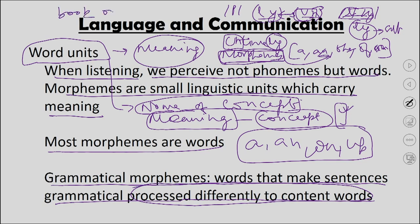Grammatical morphemes actually help us decide what meaning is being conveyed. For example, 'book on the table' versus 'book in the table' — the words 'on' and 'in' decide where it is. When the book is 'on' the table it is on top; when it is 'in' the table it is inside. These grammatical morphemes help us extract meaning from sentences, while content words like 'table' and 'book' do not change — it is the grammatical words like 'on,' 'in,' 'the,' or 'a' that decide the precise meaning.